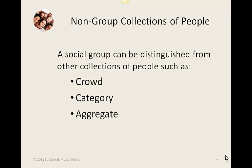A category is merely people who share the same social status — a social position, like butcher, baker, candlestick maker, male, female, young, old. All third grade teachers would be an example of a category, but a category is not a group, because all third grade teachers may not even know each other or ever meet or ever interact. They simply share the same status.